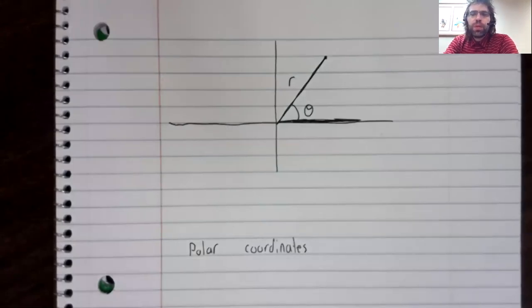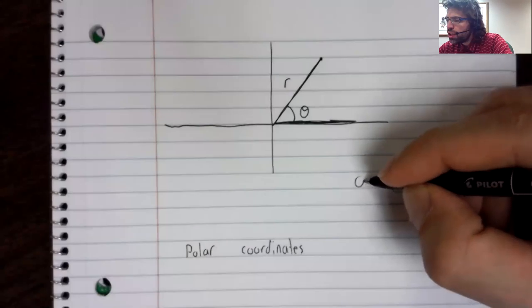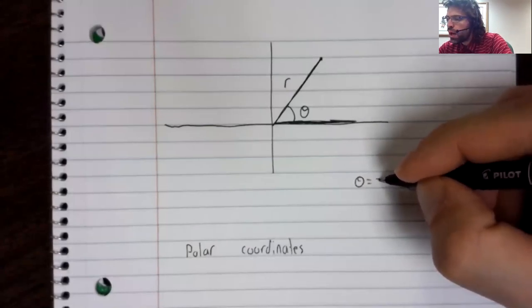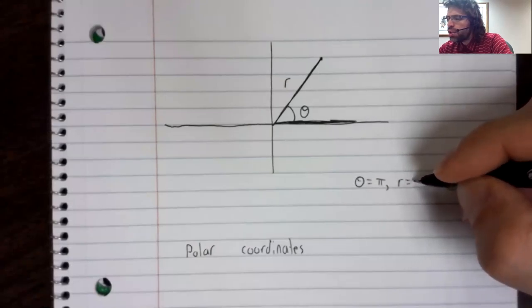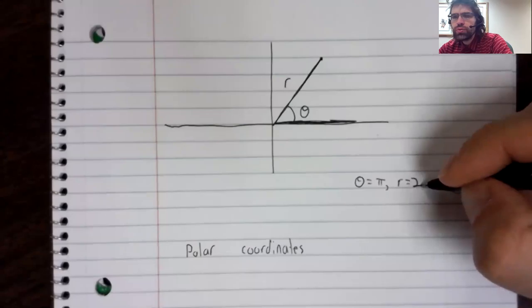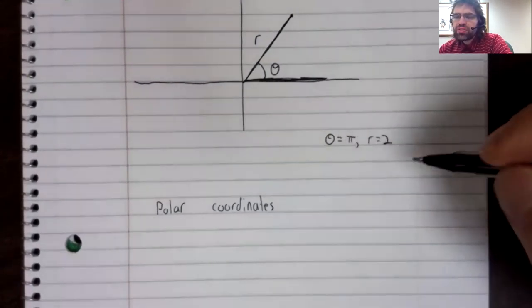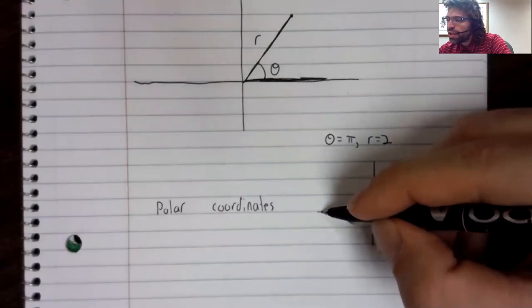So for example, if you have theta equals pi, r equals 2, this specifies a point on the plane.